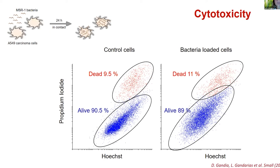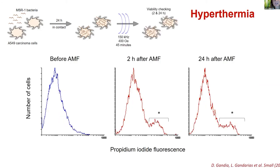We wanted to check the cytotoxicity of the bacteria in the cells. We incubated them together for 24 hours and checked if cells died using flow cytometry and propidium iodide, which only stains dead cells. Both control cells and bacteria-loaded cells showed a similar percentage of death, so we concluded that Magnetospirillum is not toxic to the cells. This led us to the next step: applying the magnetic field and checking hyperthermia treatment efficiency.